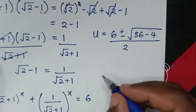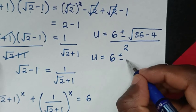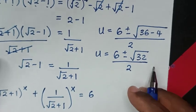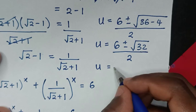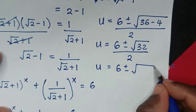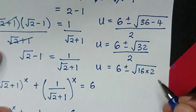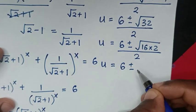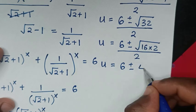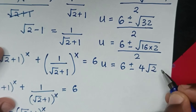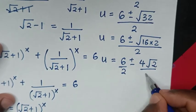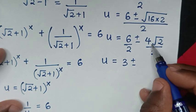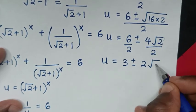Simplifying: u = (6 ± √32) / 2. Since 32 = 16 × 2, √32 = 4√2. So u = (6 ± 4√2) / 2. Dividing through by 2: u = 3 ± 2√2.